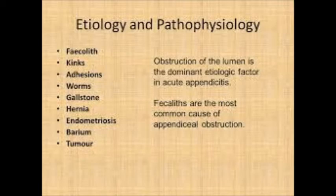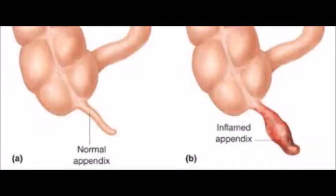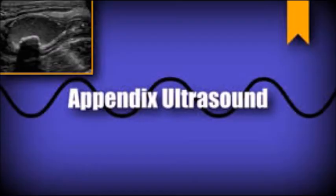Obstructive causes include fecaliths, cysts of Entamoeba histolytica, causing obstructive appendicitis. The non-obstructive theory indicates that it is due to bacteria such as E. coli, Enterococci, Proteus, and Pseudomonas. Non-obstructive appendicitis seems to be more common than obstructive appendicitis.